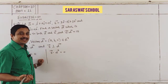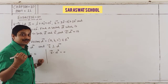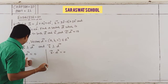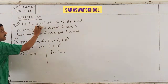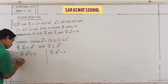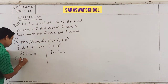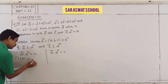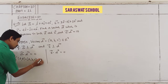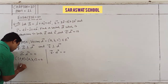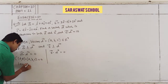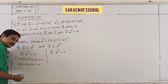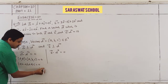Taking dot product with a: a = (1, 4, 2) and d = (a, b, c), so we get 1a + 4b + 2c = 0. That is equation number 1.